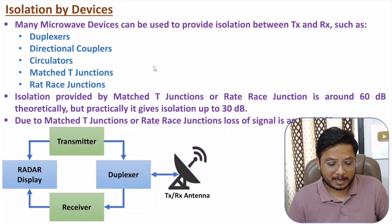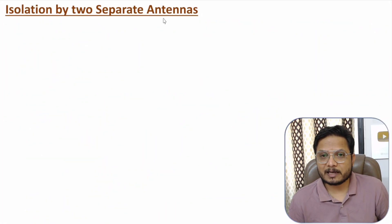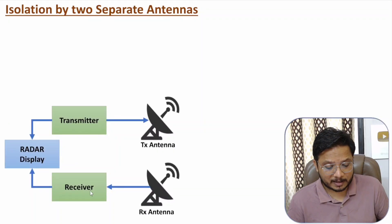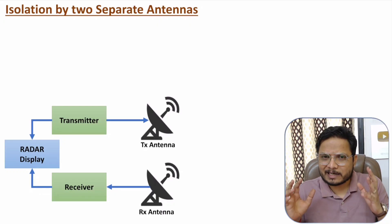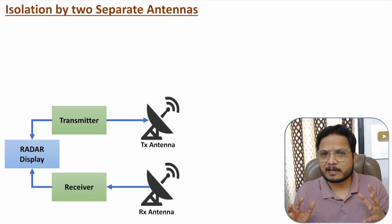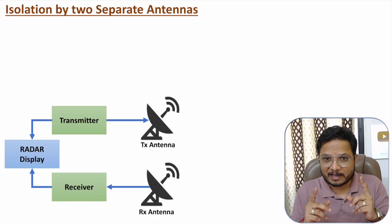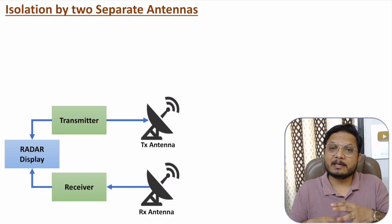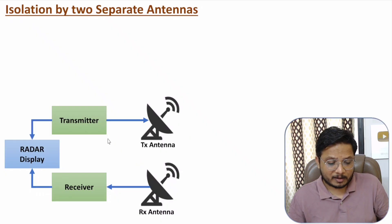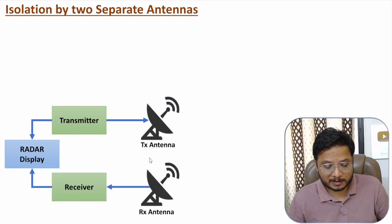Now, let us talk about isolation by two separate antennas. In a bi-static radar system, we use two separate antennas — separate antennas for the transmitter and receiver circuits — so there is isolation between them. However, there are some issues with this system. Usually in radar systems, we use parabolic dish antennas, and the size of a parabolic dish antenna is very large. So if you use two separate antennas, you will have excellent isolation, but you will be increasing the overall size of the radar system.